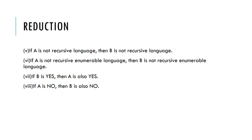Seventh, if B is yes — you are able to make the house — then A is also yes, meaning you are able to make the kitchen. Eighth, if A is no — if you are not able to make the kitchen — then B is also no, you will not be able to make the house. That is all for reduction; I hope the real-life situation made it easy to grasp.